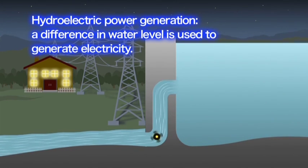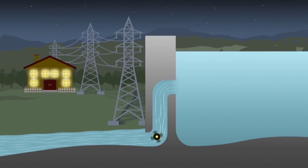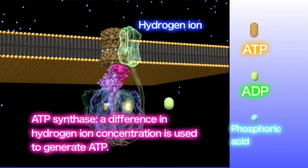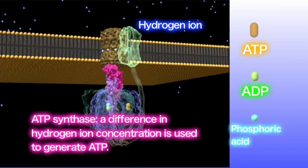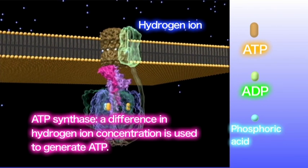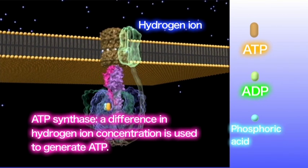The mechanism of ATP generation is very similar to that used to produce hydroelectricity. Hydroelectric power generation uses the gravitational force of falling or flowing water to generate electricity. In the case of ATP synthase, a difference in the concentration of hydrogen ions is used to generate ATP.